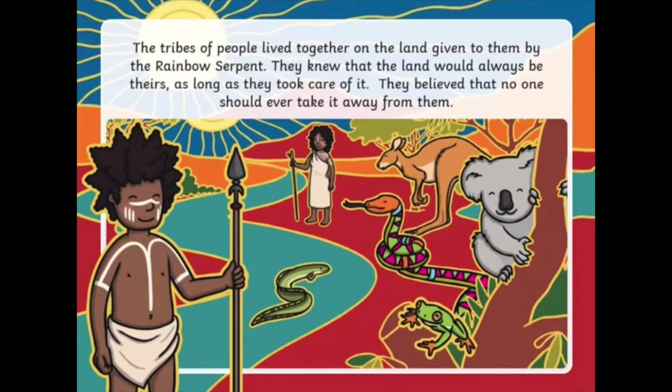The tribes of the people lived together on the land given to them by the rainbow serpent. They knew that the land would always be theirs, as long as they took care of it. They believed that no one should ever take it away from them.